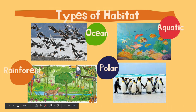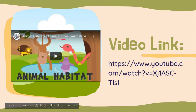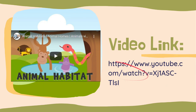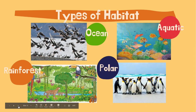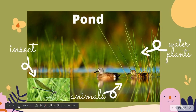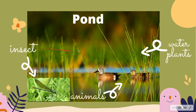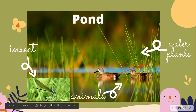Watch this video — it explains about animal habitats or their animal homes. A pond is a habitat too. It is an area filled with water, either natural or artificial, that is smaller than a lake. In this habitat, you will find different living things such as insects, water plants, and even animals.